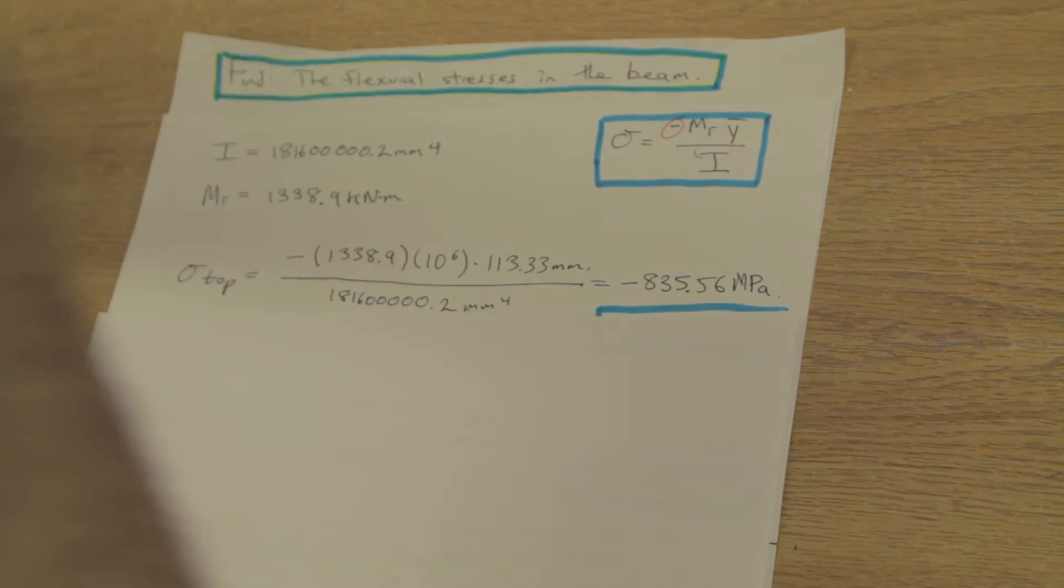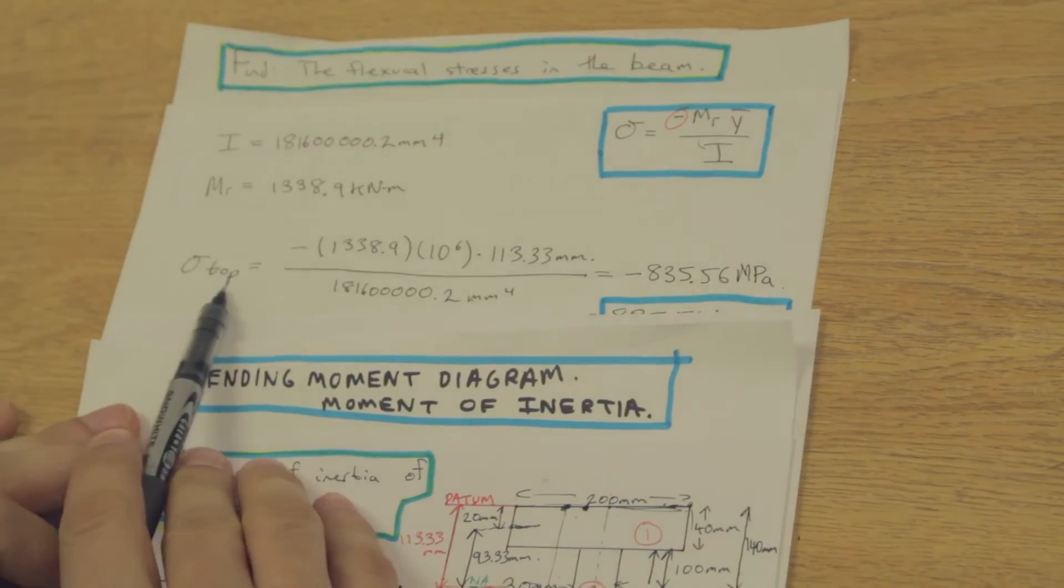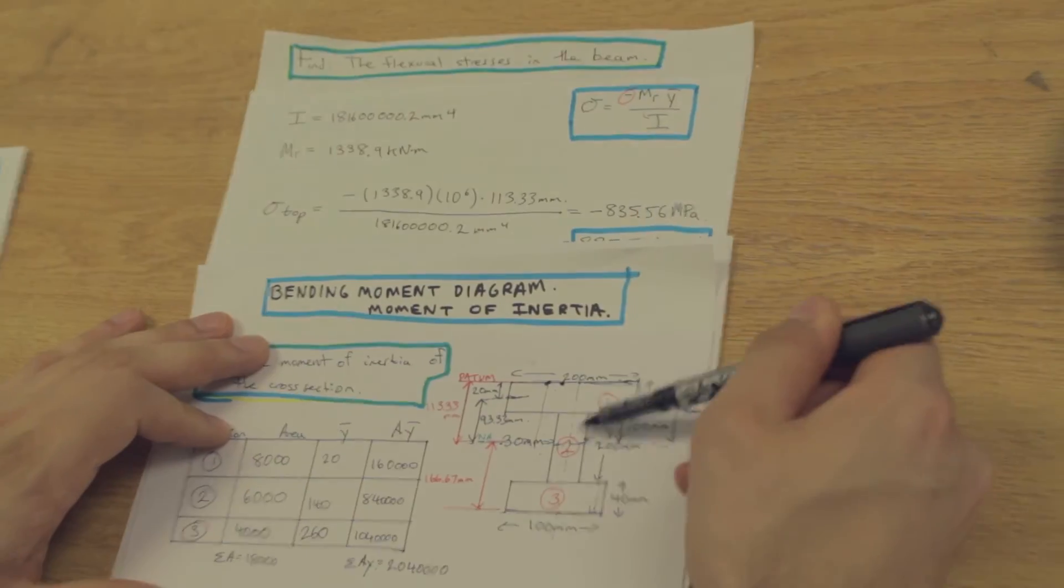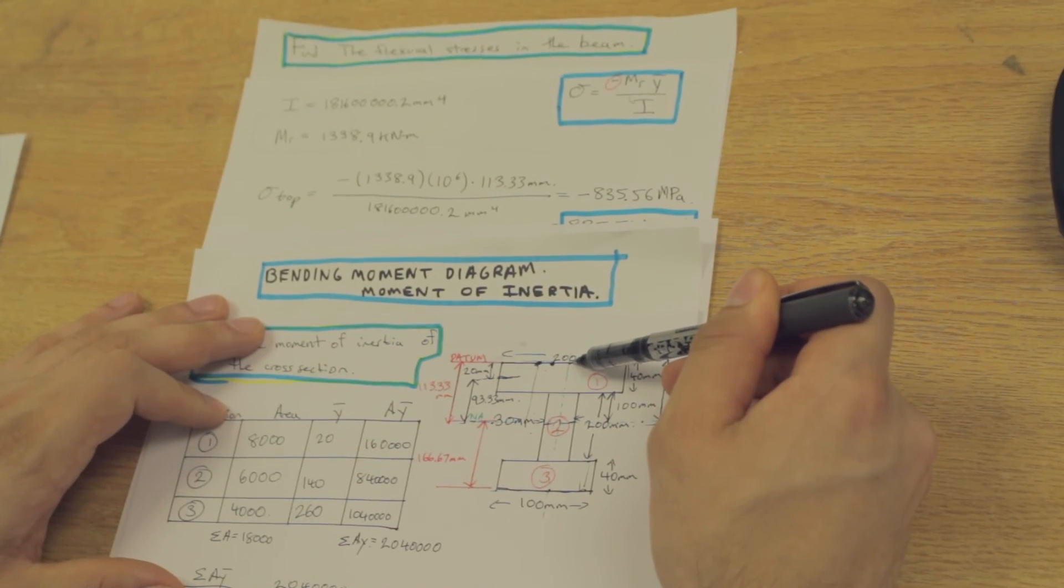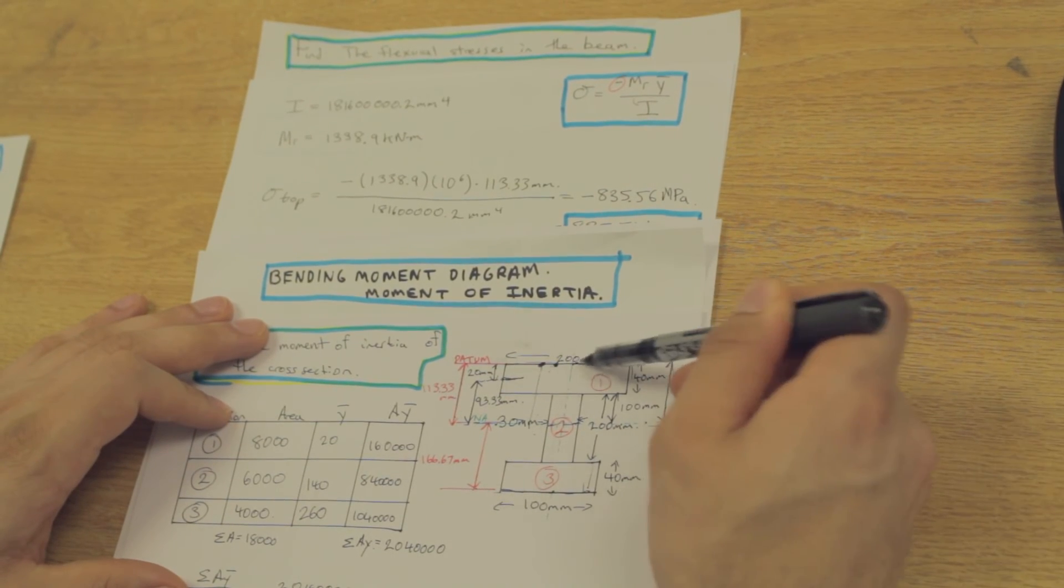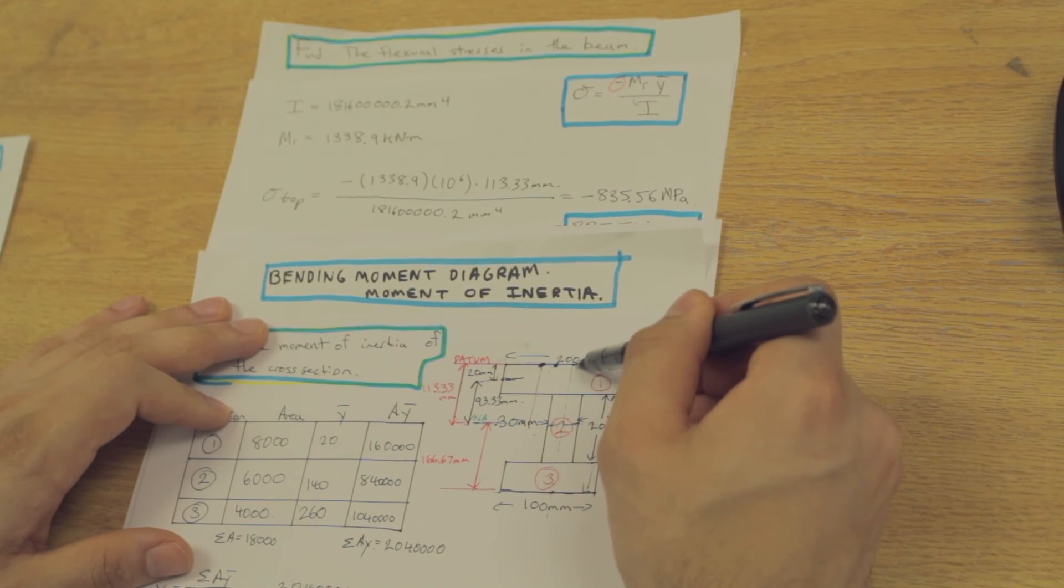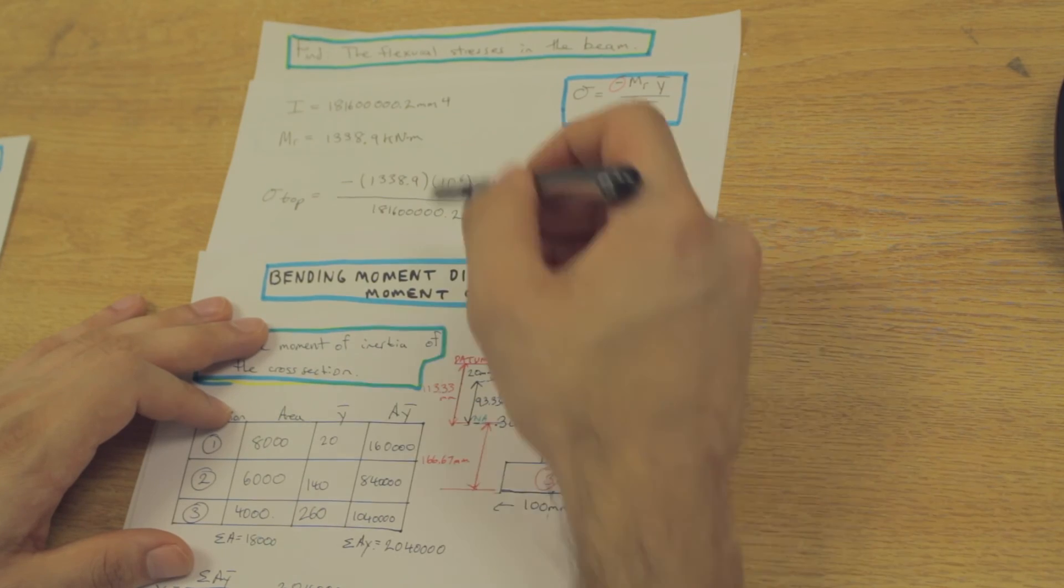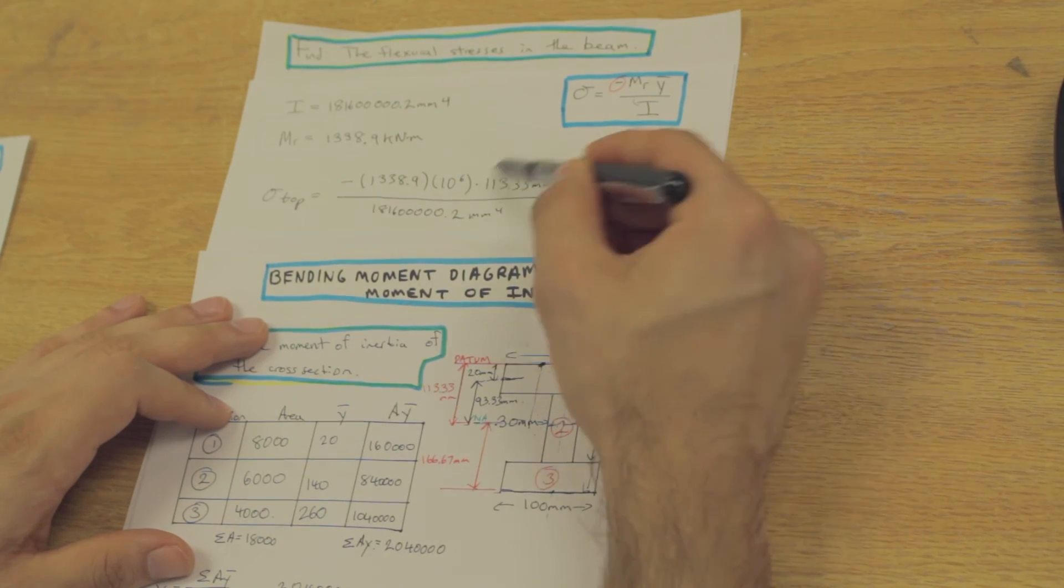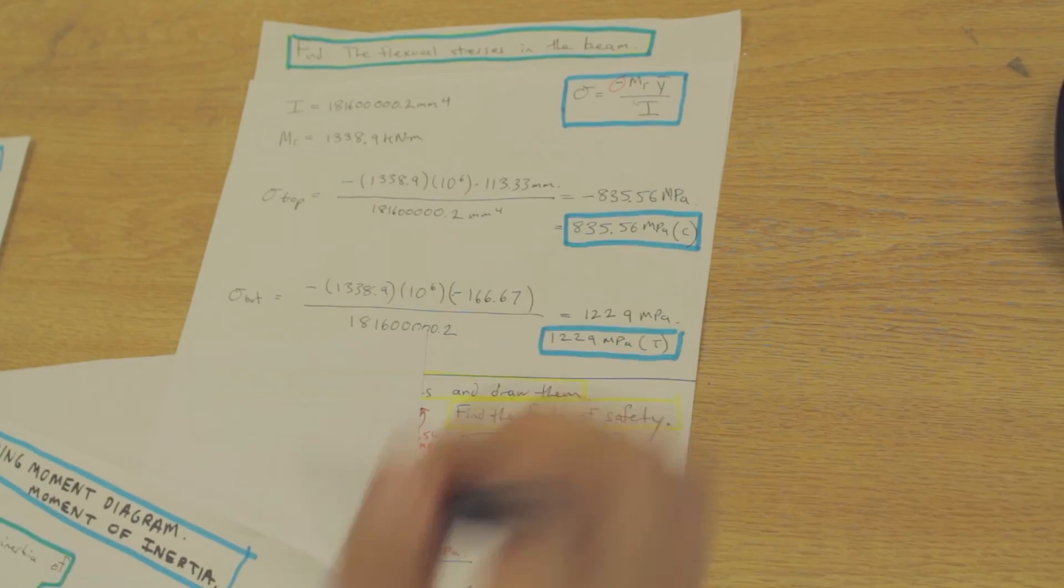let me just pull this diagram up so you can see. Y bar is the distance, since we're calculating sigma top, so we're calculating the top section of the beam from the neutral axis. Y bar is the distance from the neutral axis to the top of the beam, where we're calculating the flexural stress, where the maximum flexural stress occurs. And because we're going up towards the top of the beam, that's a positive y bar. And you'll see in the next one that going down is negative. So the sign in front of this y bar here is going to be positive, and we're just going to divide by the moment of inertia.